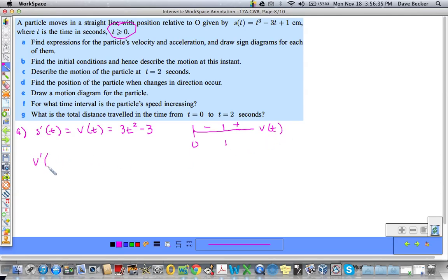Acceleration is equal to the derivative of velocity. So that's A of t. And that's clearly equal to 6t. And let's make a sign diagram here. And the only point of interest is zero. And it's always going to be positive. So that's acceleration.